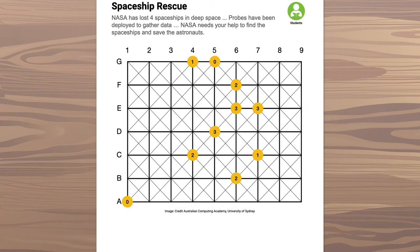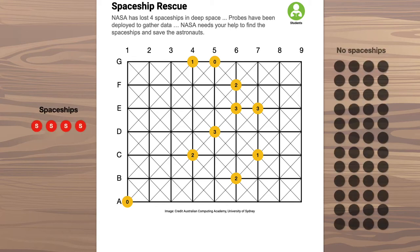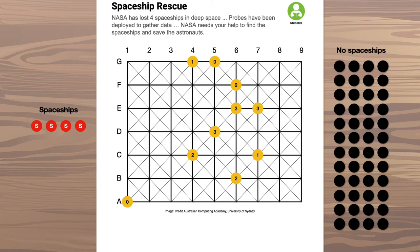By putting together all of the data from the probes, you can figure out where the lost spaceships are. You've got some spaceship markers to place on the grid where you think they are, and a pile of no-spaceship markers to fill in the other spots on the grid.